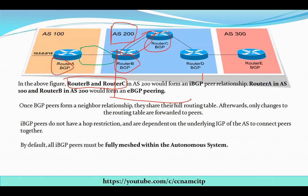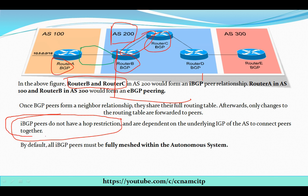The next point: IBGP peers do not have a hop restriction. Interior BGP peer relationships are not limited by hop count, and they are dependent on the underlying IGP of the autonomous system to connect peers together.